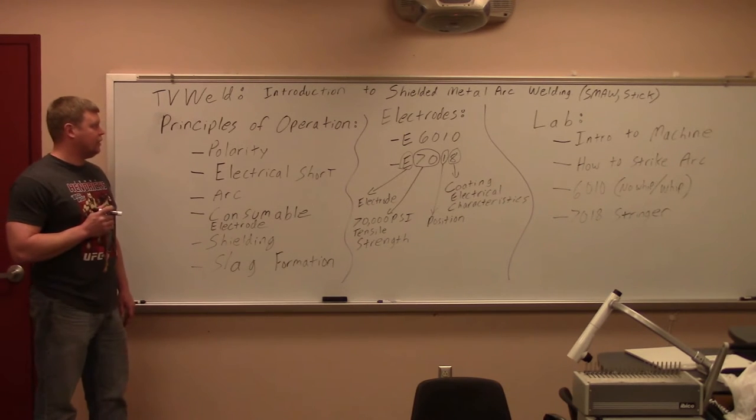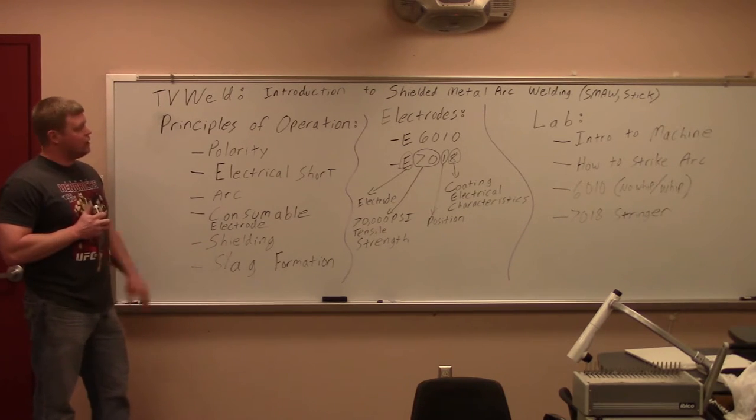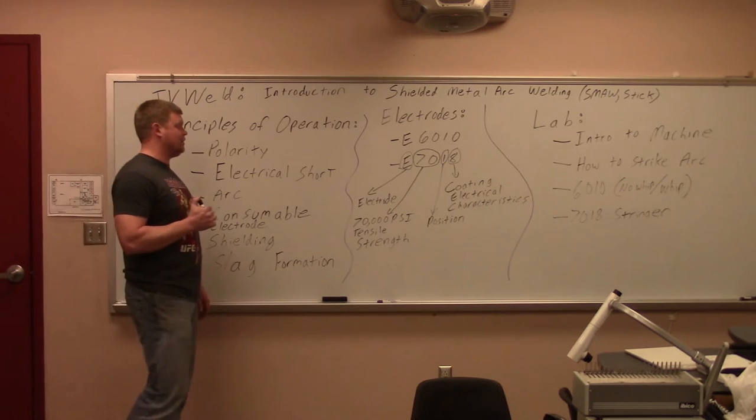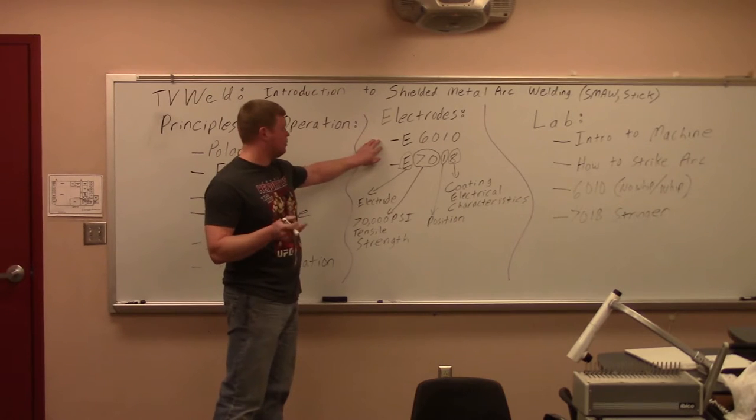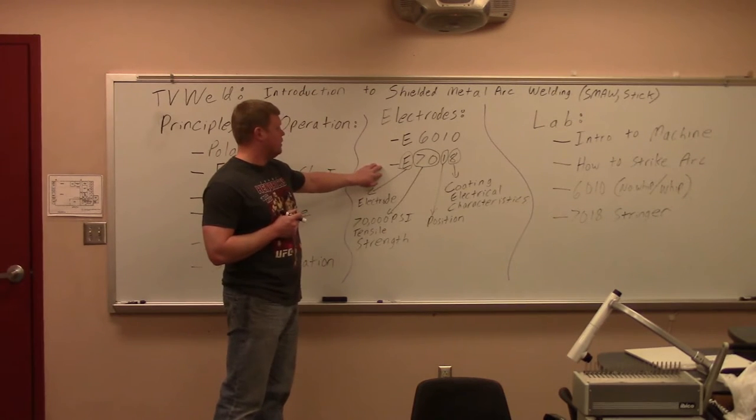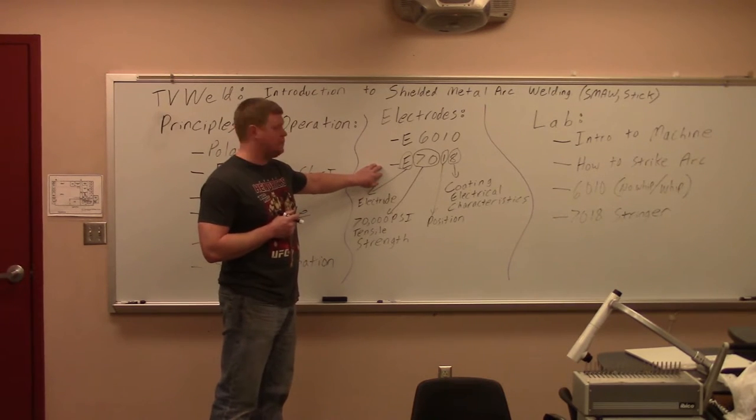So what we'll do now is we'll move over here into our different kinds of electrodes, and we're going to do the two main kinds. I think every welder will agree that you have a 6010 or a 6011, which is very similar, and then a 7018, and they're probably the most common types of electrodes.